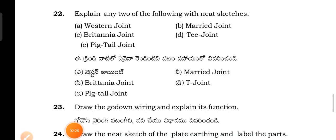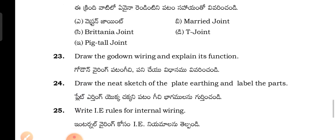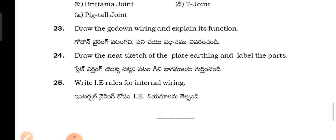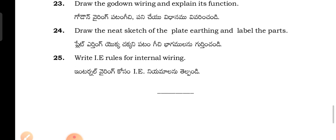Explain any two of the following which need sketches: Western joint, married joint, T joint, and pigtail joint. Draw the cleat wiring and explain its functions — cleat wiring patam gichi panche vidhanam. Draw the neat sketch of plate earthing and label the parts.